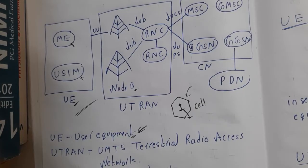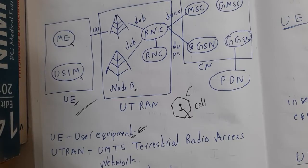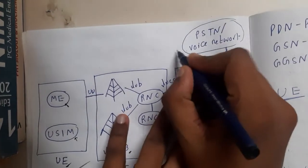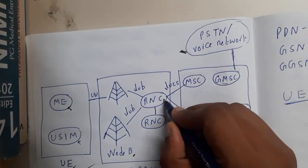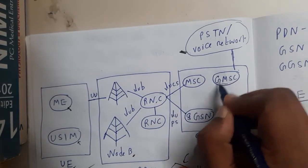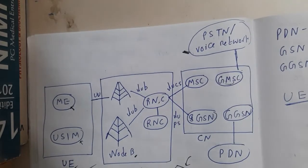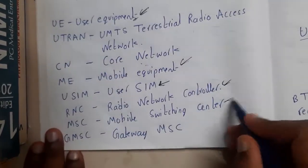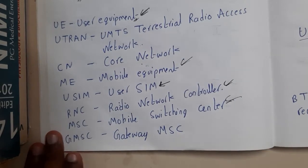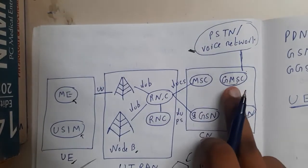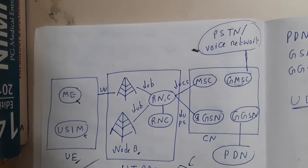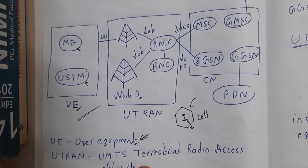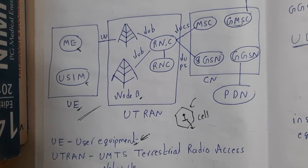There are two different paths. If you just want to make a voice call to your friend, there is a path that takes you from the RNC to the MSC — Mobile Switching Center — then to a gateway, and after that to the voice network, completing the call.